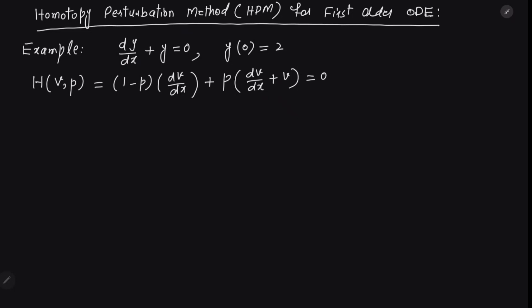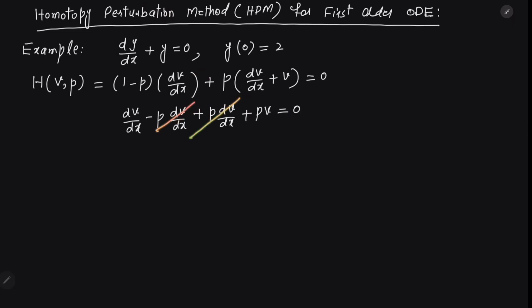Now let's simplify by hand. Expanding, we get dv/dx minus p·dv/dx plus p·dv/dx + pv = 0. The two p·dv/dx terms cancel out, leaving us with dv/dx + pv = 0. We call this equation number 2.